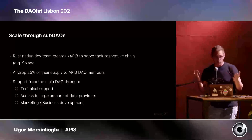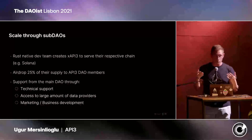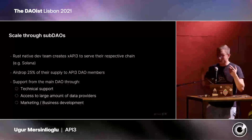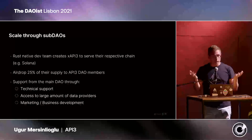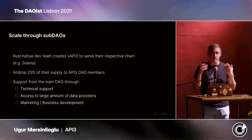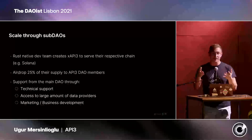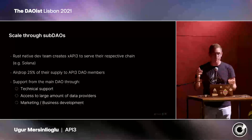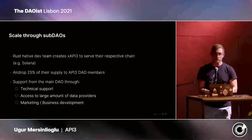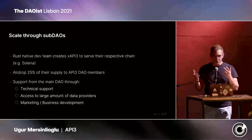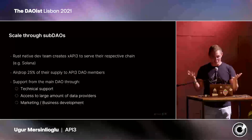The API3 DAO would support this through technical assistance — giving them access to large amounts of data providers. We currently have over 170 businesses running data sources directly and providing data. We would also support this potential team with marketing and business development efforts. And a lot of you are probably thinking, it sounds like a franchise model — who would want to do this? But there's actually already precedent for this.